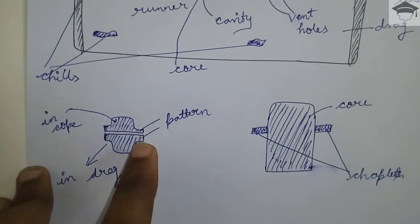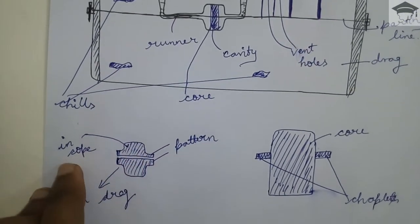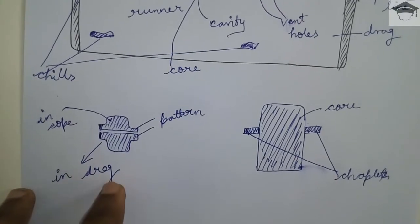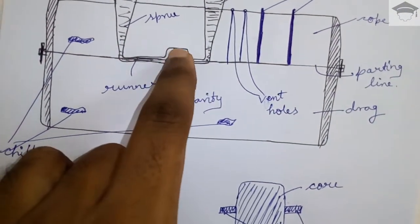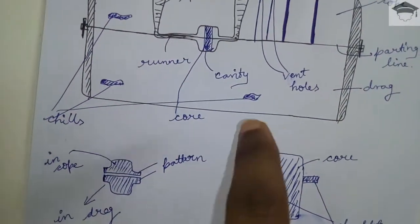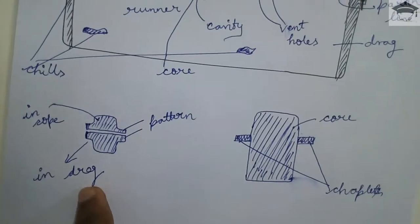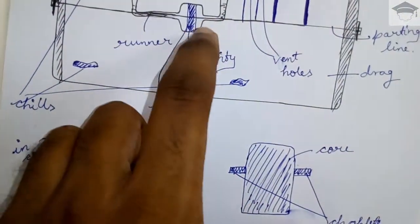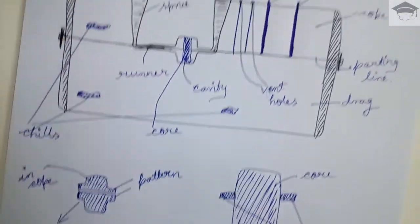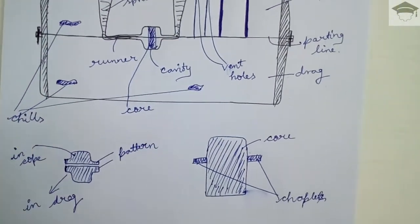Now this is the pattern. This shape is used to put in cope, this is used to put in drag. When the pattern is used here in the cope and then taken out then we will get this shape hollow. And similarly in drag when we put this lower piece and we take out then we will get the remaining cavity. And when we join cope and drag we get the complete cavity.